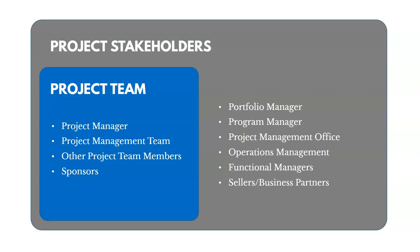The first thing you should know is that the project team itself is actually a stakeholder on the project. It includes your project manager, your project management team, other project team members, and sponsors. Other stakeholders could include a portfolio or program manager, a PMO, operations management and operational stakeholders, functional managers, sellers, business partners, and so on.